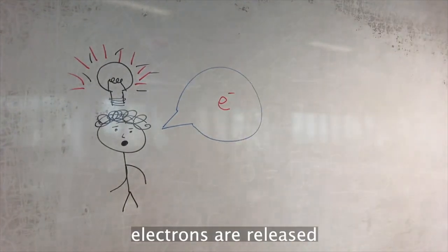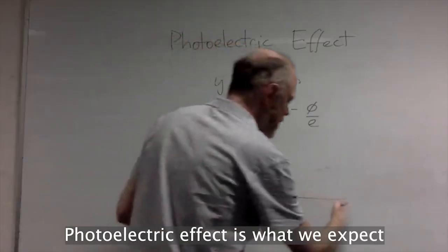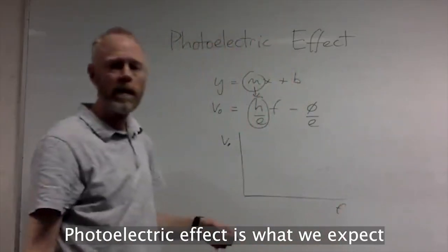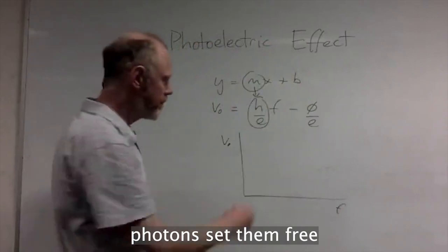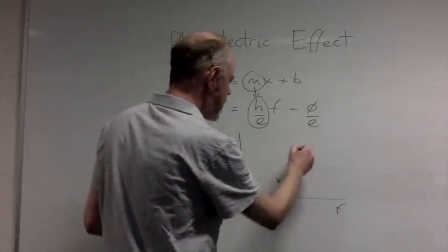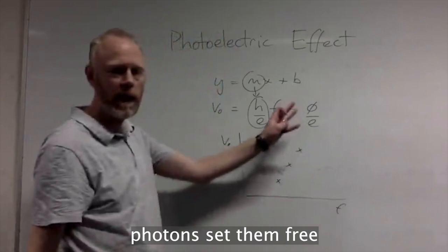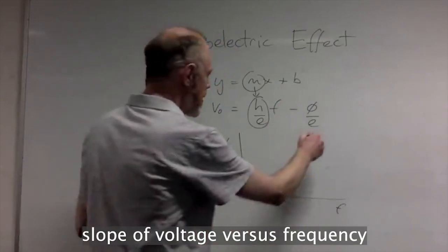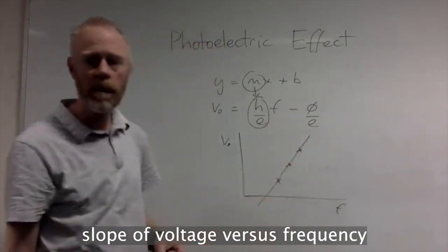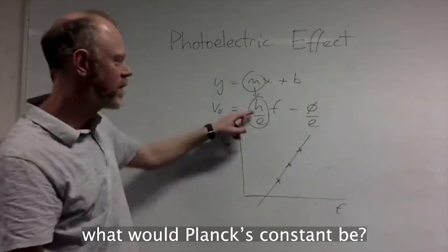Electrons are released, photoelectric effect is what we expect. Photons set them free. Photons set them free. Slope of voltage versus frequency, what will Planck's constant be?